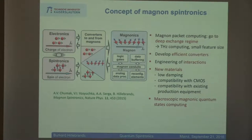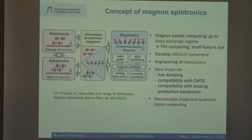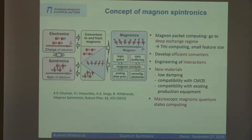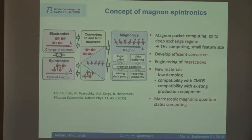Back to magnonics and magnon spintronics: magnonics is a field where you do everything with magnons — you can build logic gates, data buffering, analog data processing, reconfigurable elements, magnon conduits. But you have to take the interface to electrons into account: the spin Hall effect, inverse spin Hall effect, spin transfer torque effects, and so on. You need efficient converters to go from one field to the other. Material is a very big issue, but to make our life simple for the rest of my talk, we simply discuss only yttrium iron garnet, which is the best practical material we have in terms of damping.